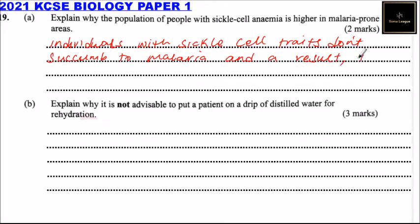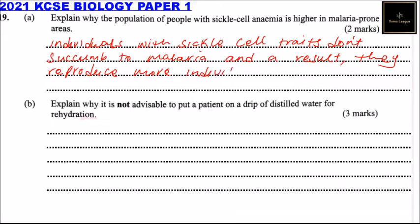As a result, they reproduce more individuals with similar traits, increasing the population of sickle cell individuals in malaria-prone areas.